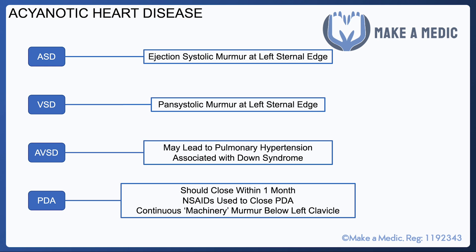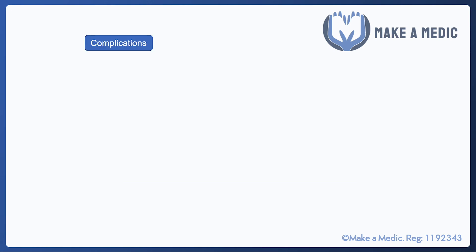Patent ductus arteriosus is a condition in which the ductus arteriosus remains open beyond one month — it normally closes before then. The good thing is it's usually relatively easy to close by giving something that inhibits prostaglandin synthesis, like an NSAID such as indomethacin. It usually causes a machinery-like murmur just below the left clavicle.